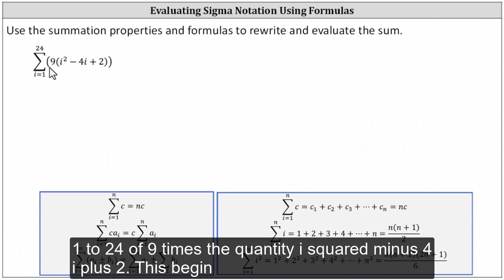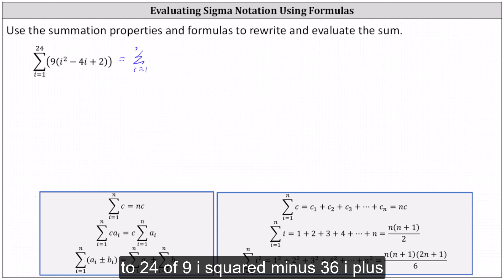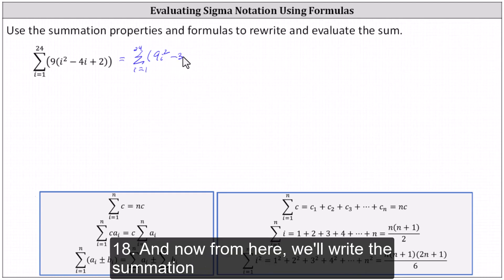Let's begin by distributing the 9, which gives us the summation from i equals 1 to 24 of 9i squared minus 36i plus 18.